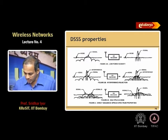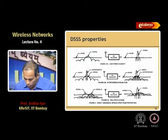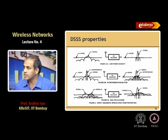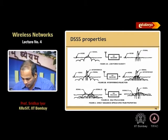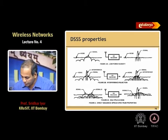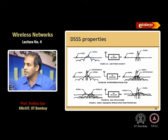Suppose there is a narrow band interference in the signal space. Once you do the XOR, the interfering signal being narrow band gets spread, while the spread signal gets recovered. Similarly, if there are two spread signals using different spreading sequences, one interfering signal remains spread while the original is recovered as a narrow band signal at the other end.